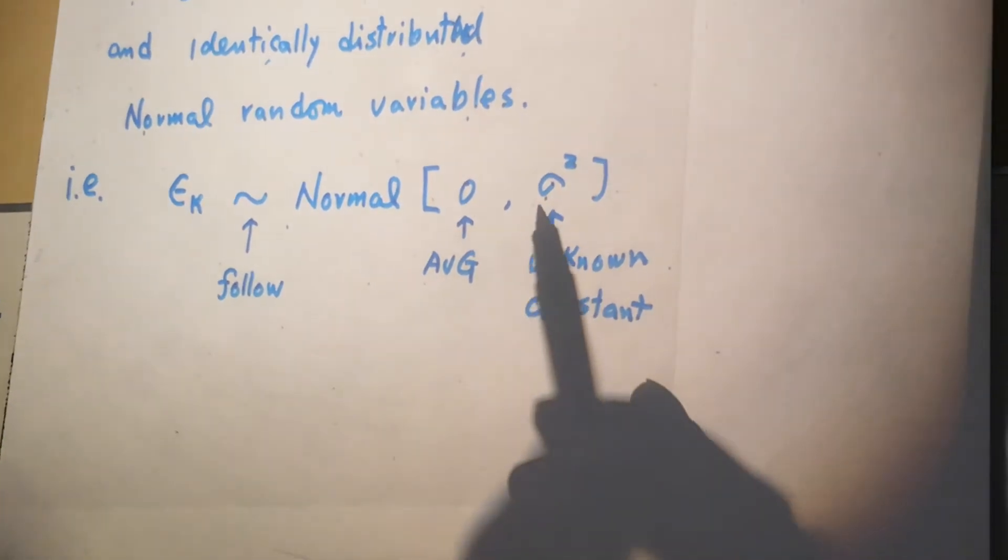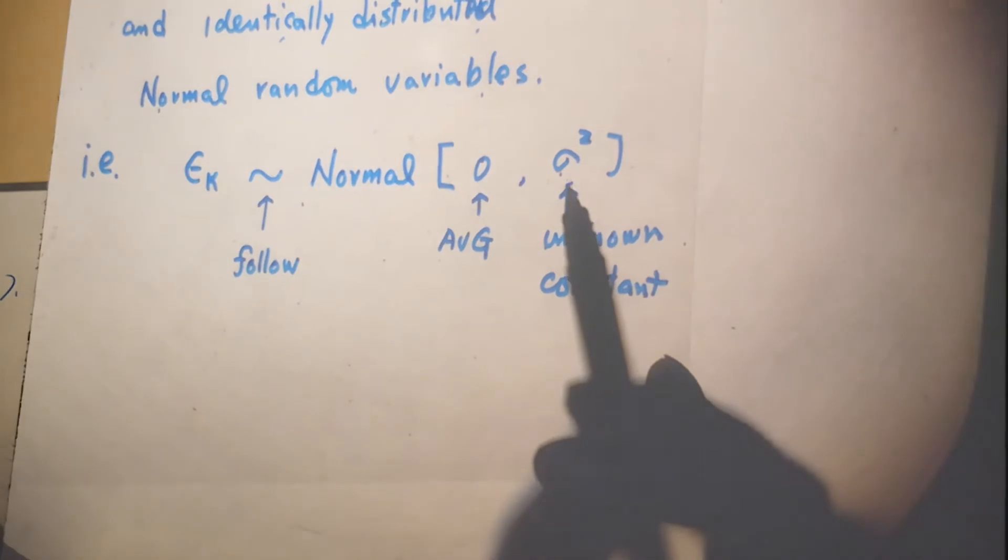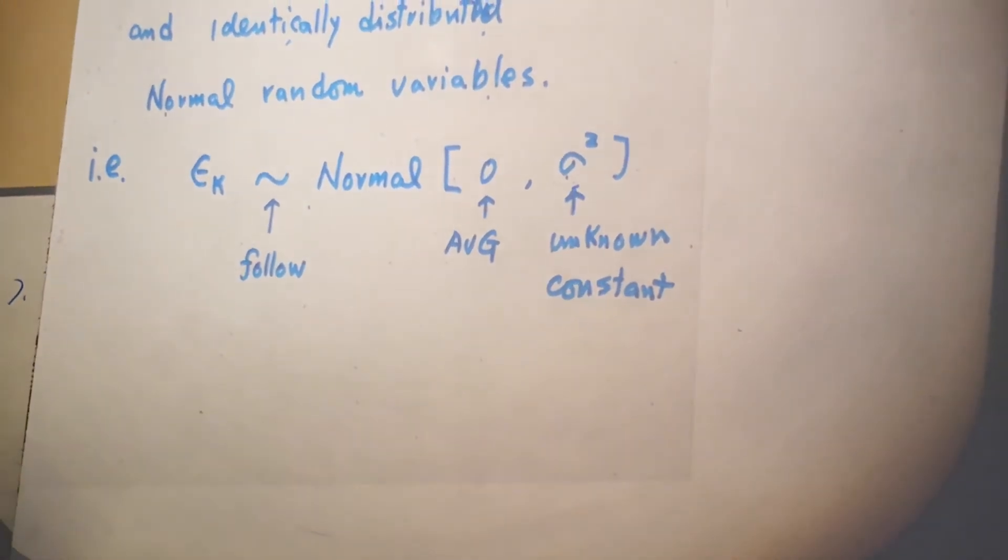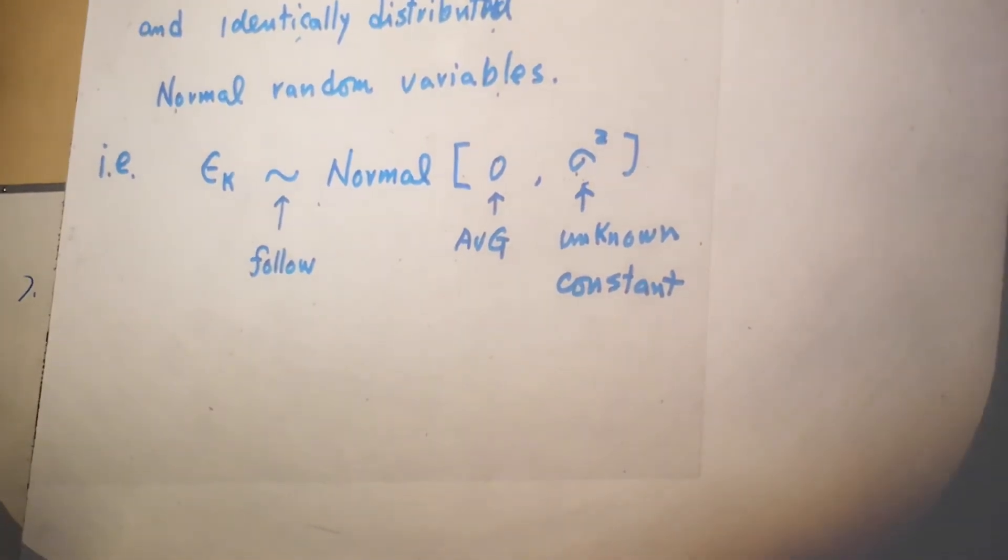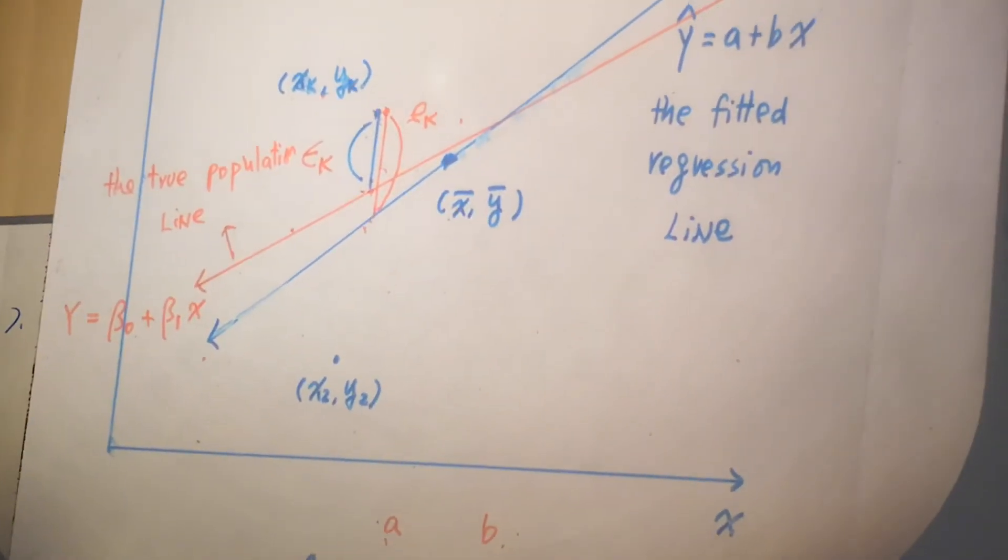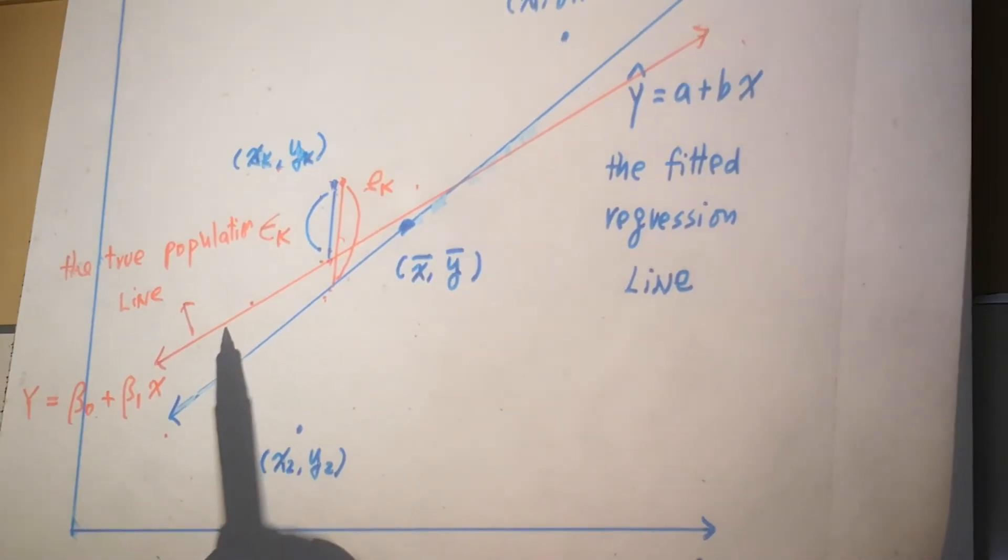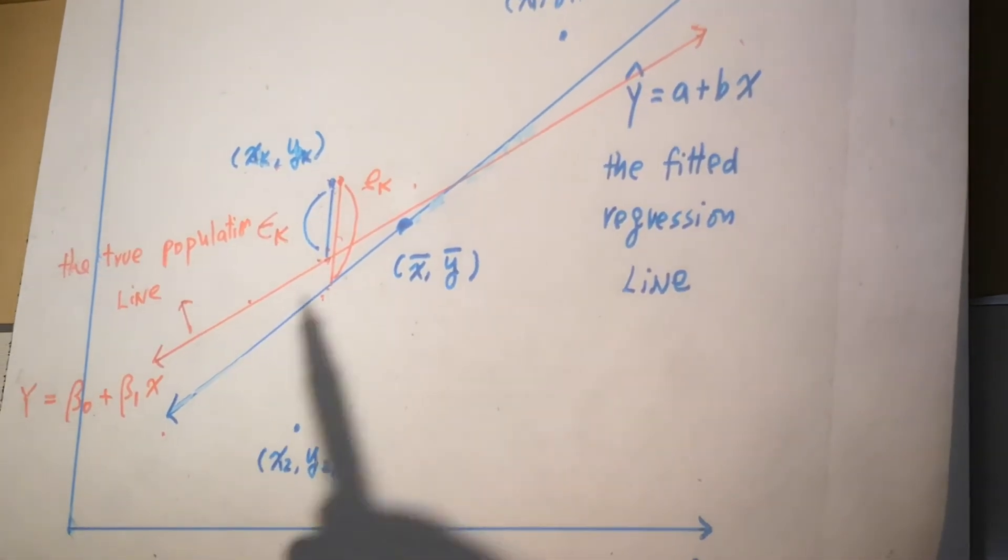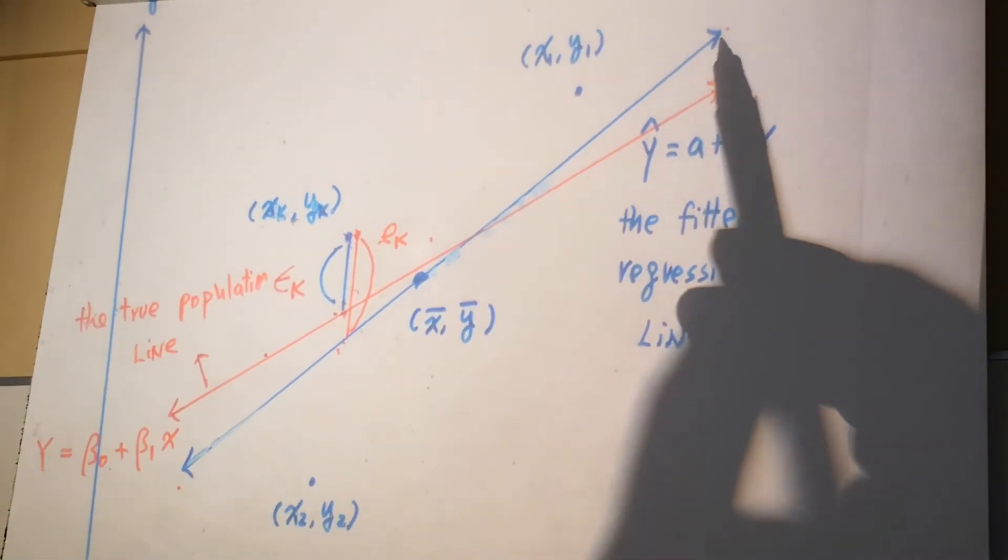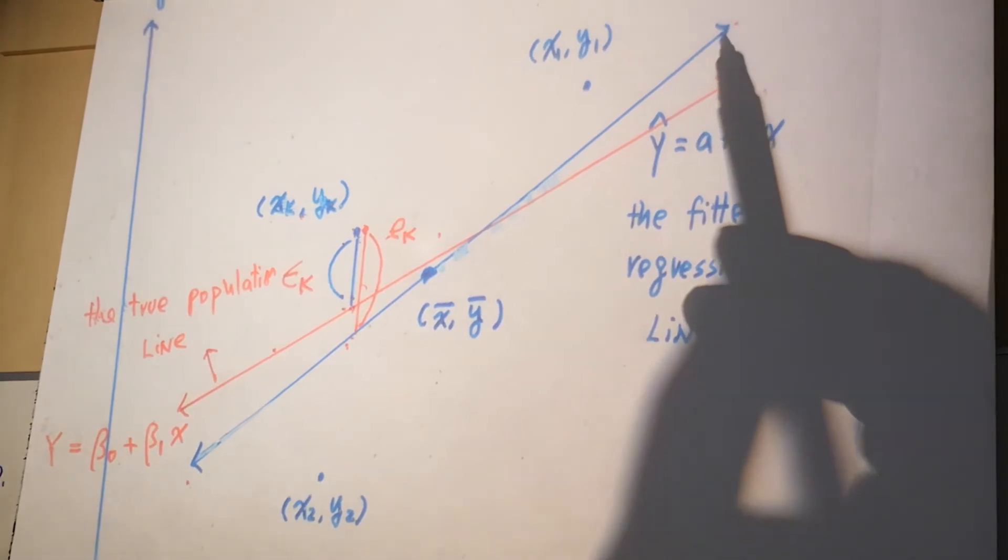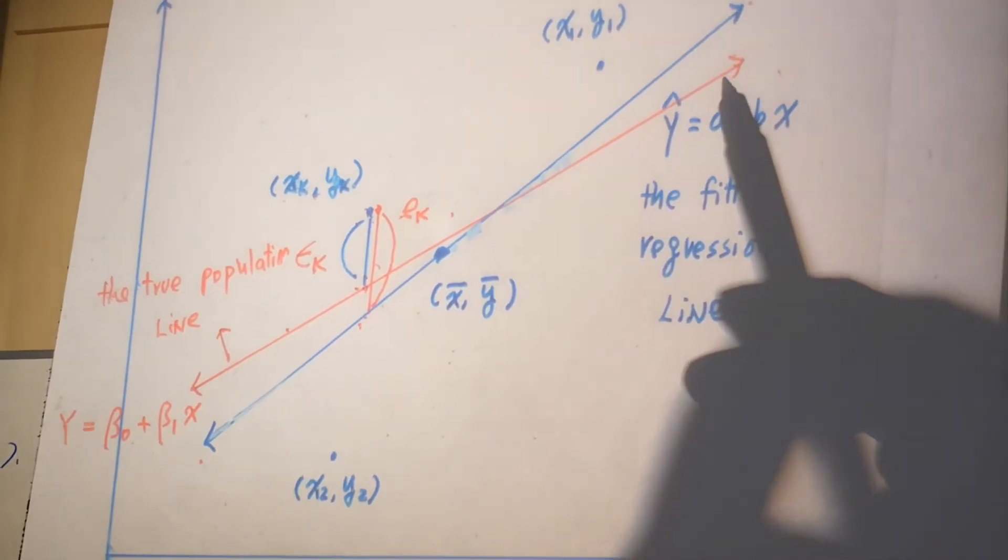You need to also estimate σ². But how can we estimate σ²? Look at the graph. The red line is the true population line we want to estimate, and the blue line is the least squares regression line. We use the least squares regression line to predict the behavior of the true population line.